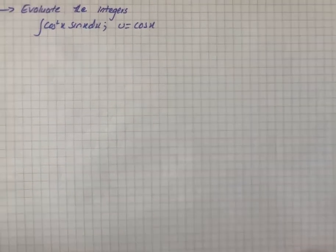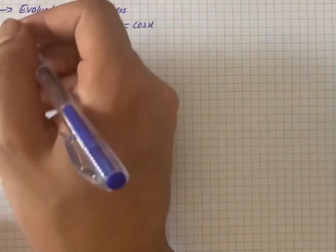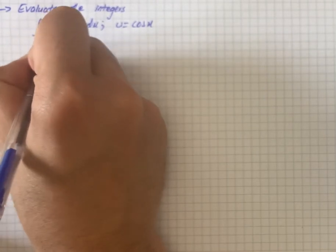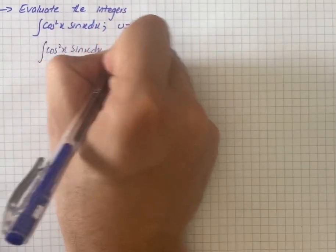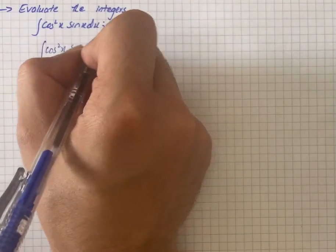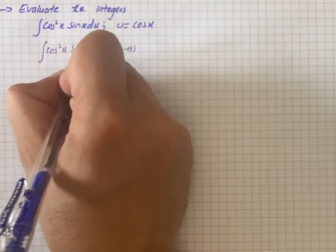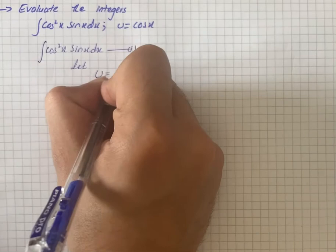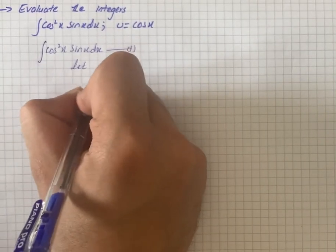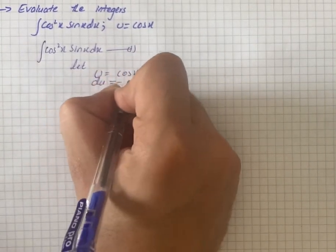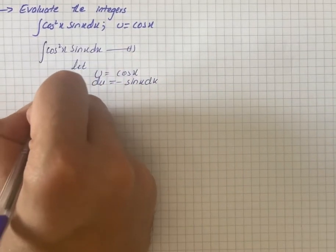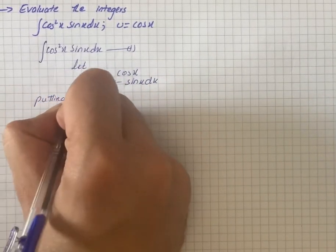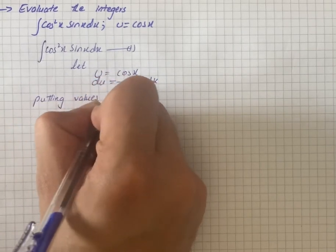Here we have a question to solve. We have to evaluate the integral. First of all, we write cos²(x)·sin(x)dx. We will let it be equation number one. So we will let u equal cos(x), so du equals minus sin(x)dx. Now putting values in equation one.